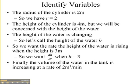Finally, the volume of the water in the tank is increasing at a rate of 2 meters cubed per minute. That was the rate that water was being poured in, so that's going to be our change in volume with respect to time. So we could say dV/dt is going to be equal to 2.